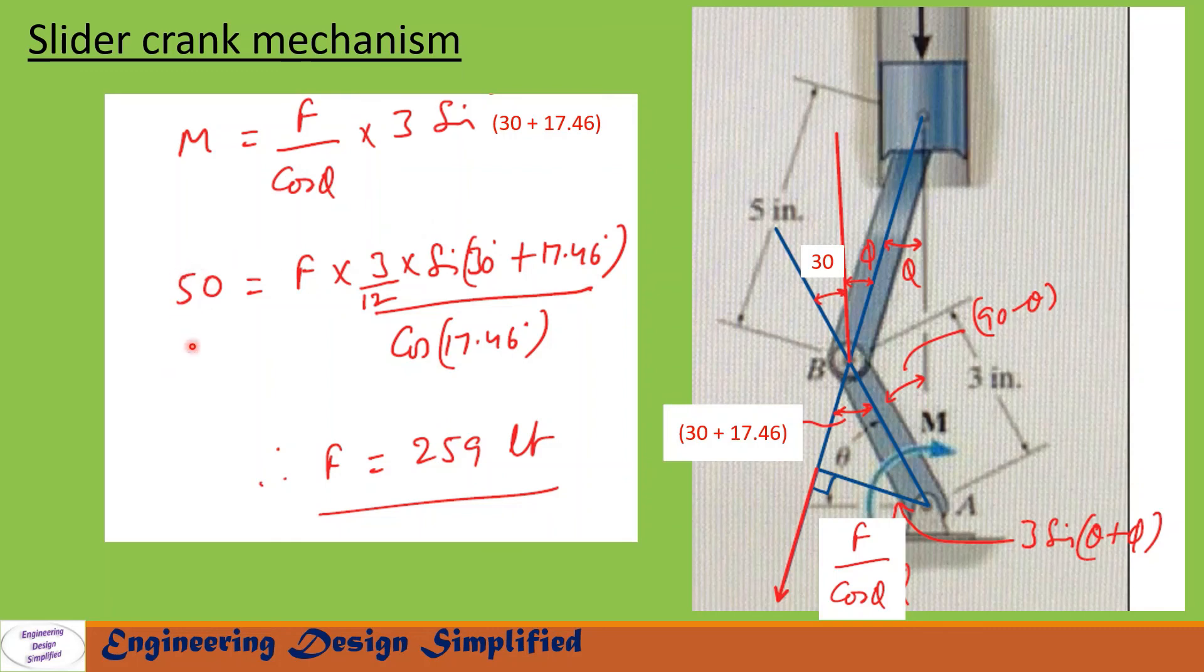Since M is given as 50 lb·ft and this 3 is in inches, to convert this 3 into feet, let us divide 3 by 12. After simplifying this, we get F force on the piston equal to 259 lb.